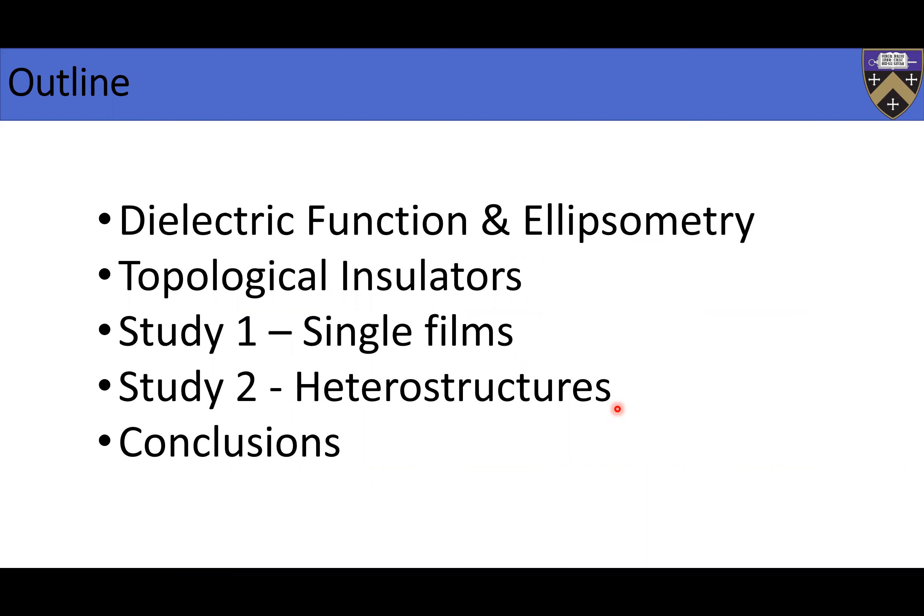Let's go over the outline. I want to give everybody a quick introduction to the dielectric function and say something about the physics of ellipsometry. Then say something about topological insulators, because these are the samples I'm going to use. I'll talk about two studies: one about single films of bismuth selenide, and then also heterostructures — and how we're going to use in-situ ellipsometry to study these single films as well as heterostructures.